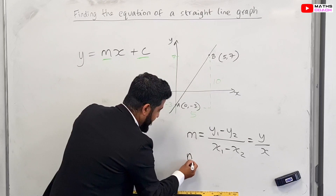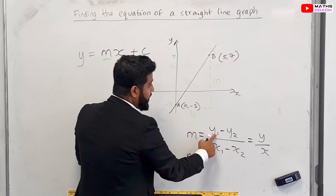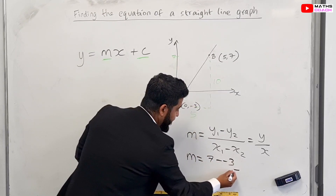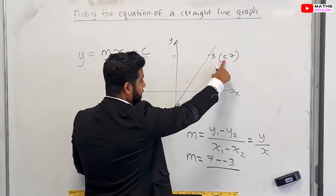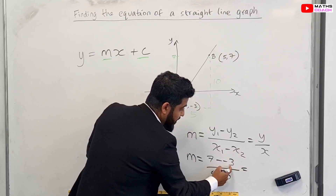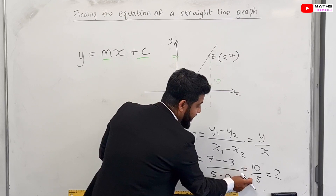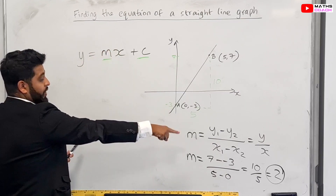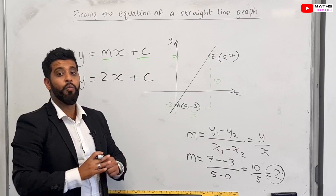So we take our y values: y1 is 7, so we do 7 minus minus 3, over our x values — x1 is 5, so 5 minus 0. Calculating that: 7 minus minus 3 is 7 plus 3 which is 10, and 5 minus 0 is 5. So our gradient is 10 divided by 5, which equals 2. We can now replace m with 2, giving us y = 2x + c. That's the first step with any of these types of questions.